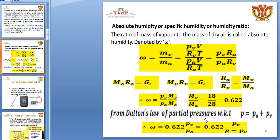Since total pressure P equals P_A plus P_V, the partial pressure of air P_A equals P minus P_V. Therefore, omega equals 0.622 times P_V divided by (P minus P_V), giving the specific humidity formula in terms of partial pressures.